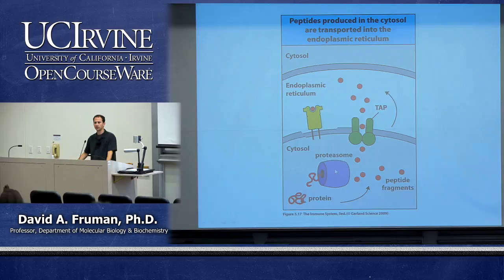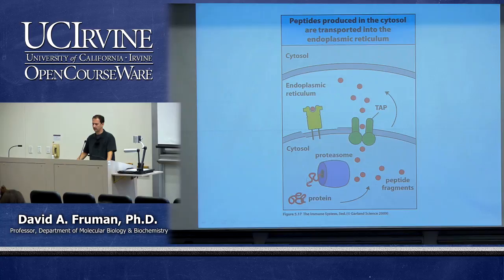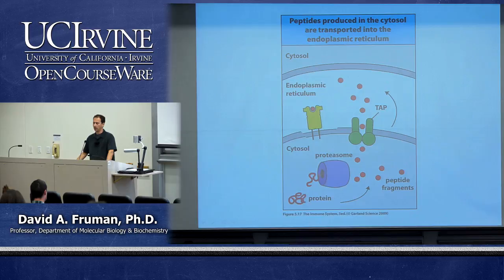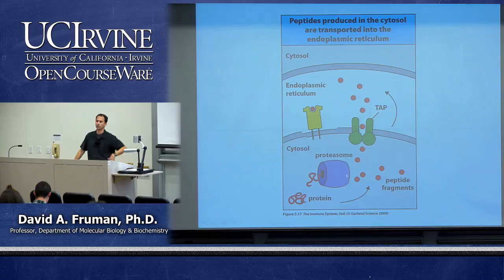All proteins in the cell have a certain turnover rate — after they're made, they get degraded when they get old, misfolded, or somehow damaged. That's true of all your host proteins as well as any viral or other pathogen proteins in the cytoplasm. The main mechanism for degrading proteins is known as the proteasome — a highly conserved structure found even in archaebacteria, with 28 subunits. It's a huge molecular machine: proteins come in one end, get unfolded and digested, and come out the other end as peptides. During viral infection, the proteasome composition changes to become even better at producing 8 to 10 amino acid peptides able to bind to MHC class 1.